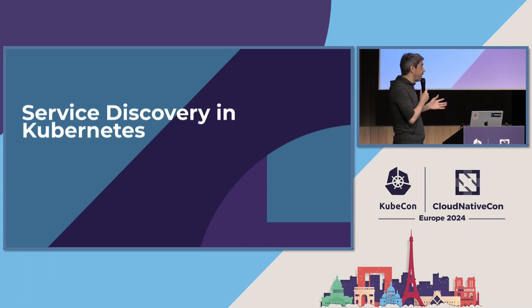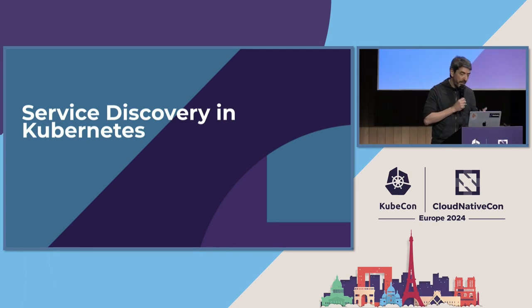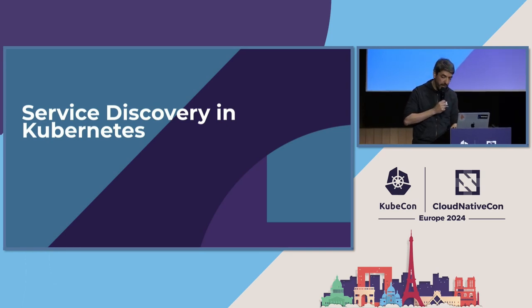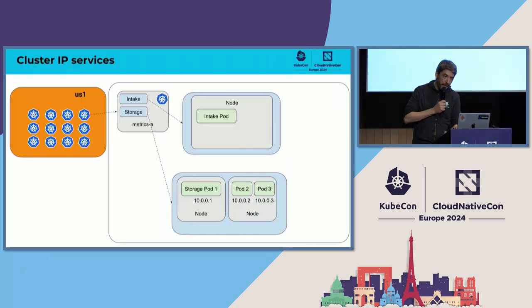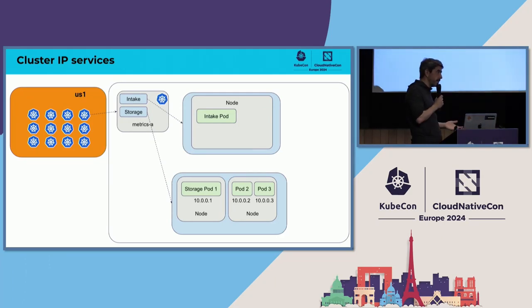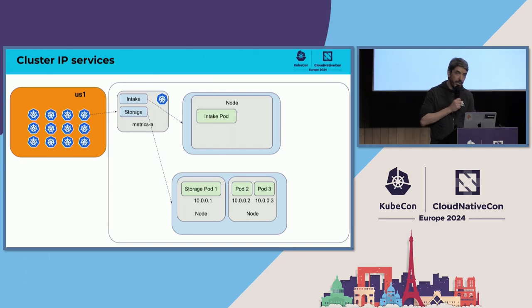Now that we have an idea of how we run things, because we have many applications, they need to talk to one another, and this means service discovery. Before diving into how we do things, we're going to give you a quick overview of how it works in Kubernetes in general. When you start deploying a service in Kubernetes, the first thing you'll probably do is create a service with a default configuration, and it's going to be a cluster IP service.